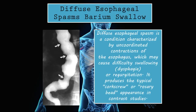Diffuse esophageal spasms on barium swallow. Diffuse esophageal spasms are a condition characterized by uncoordinated contractions of the esophagus, which may cause dysphagia as well as regurgitation. It produces the typical corkscrew or rosary bead appearance on contrast studies. We have a problem with peristalsis — the muscular layer of the esophagus is spasming — and it produces this kind of image on a barium swallow. You can see the rosary bead or corkscrew appearance because of the specific pattern it creates.